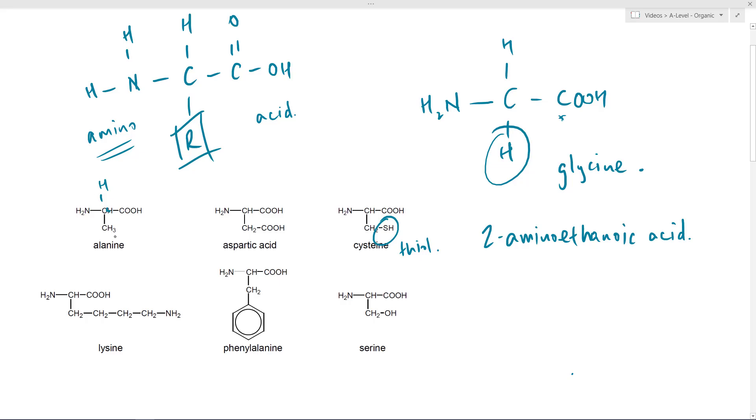So you've got one, two, three, four different groups attached around this central carbon there. This therefore becomes a chiral carbon, a chiral centre and you can therefore draw enantiomers as such. So they can pull lots of different organic topics together within this amino acid. It's quite a simple short little topic but there's lots of scope for sort of breadth within it. So just watch out for optical isomerism.